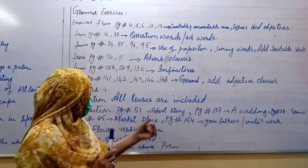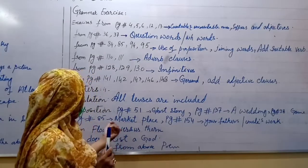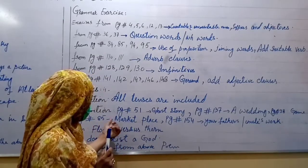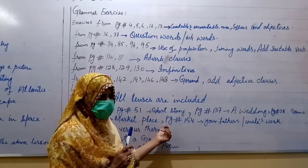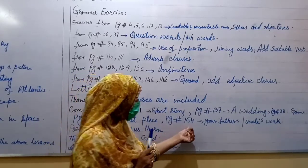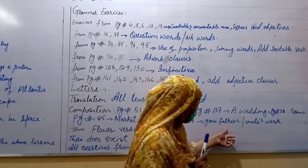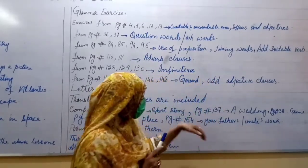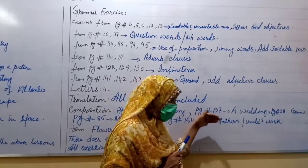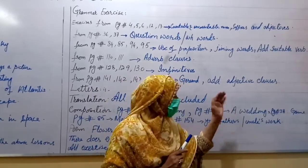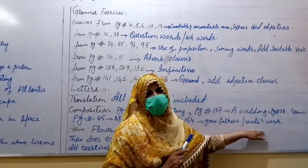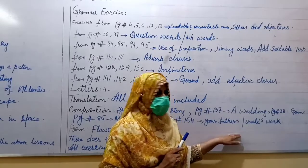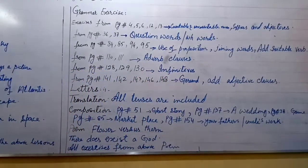Next topic about composition from page number 85 Marketplace. And next from page number 54 Your father's or uncle's work. You have to compose here what are your father's work or uncle's work. Any one topic you have to write here.